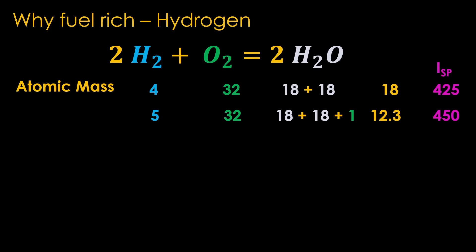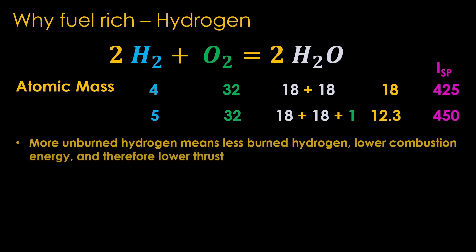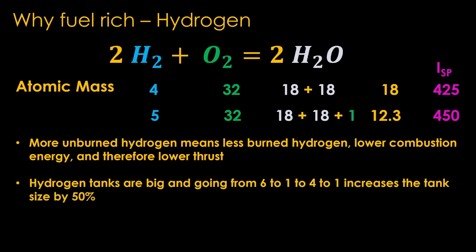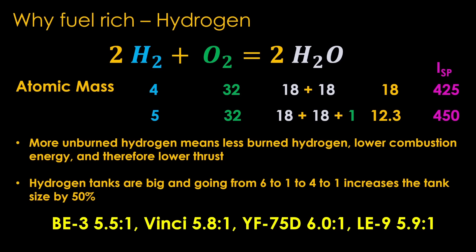You can get specific impulse up to about 470 if you drop the mixture ratio to 4.1, but more unburned hydrogen means less burned hydrogen, lower combustion energy, and therefore lower thrust. Further, hydrogen tanks are big because hydrogen is not dense, and going from 6-to-1 down to 4-to-1 increases the hydrogen tank size by 50%. This is why hydrolox mixture ratios tend to cluster around 6-to-1. Blue Origin's BE-3 is 5.5-to-1, France's Vinci is 5.8-to-1, China's YF-75D is 6.0-to-1, and Japan's LE-9 is 5.9-to-1.